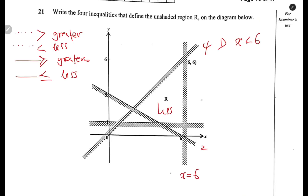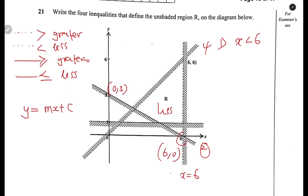For the second inequality, you need to know the concept of the straight line — that is coordinate geometry. I have a video on my platform that contains everything you need to know about coordinate geometry. The equation of a straight line is y = mx + c. We pick the coordinates: the first point is (6, 0) and the second point is (0, 3).